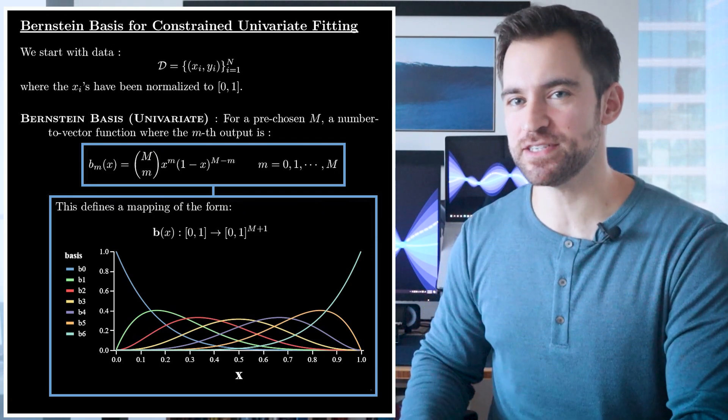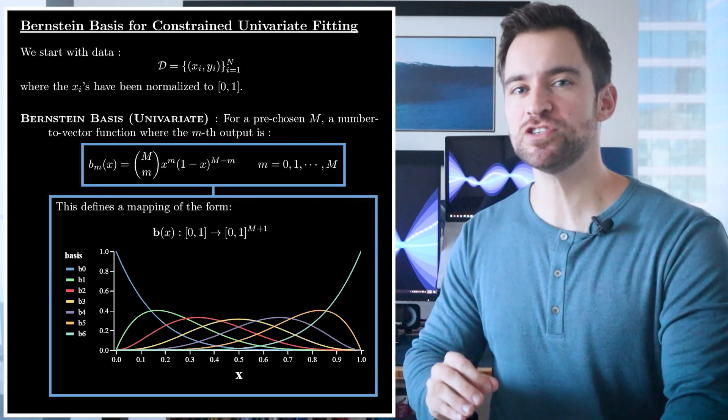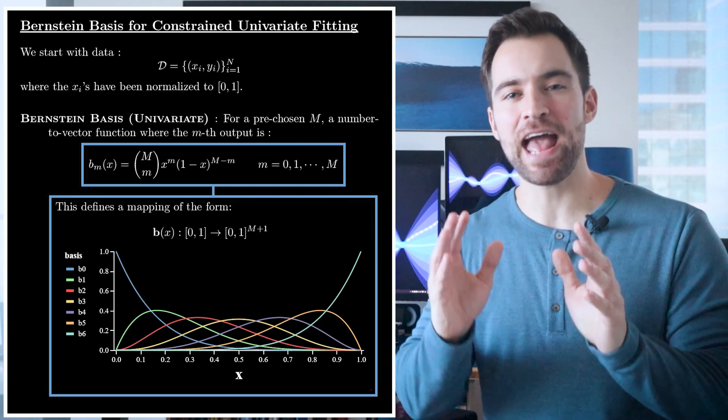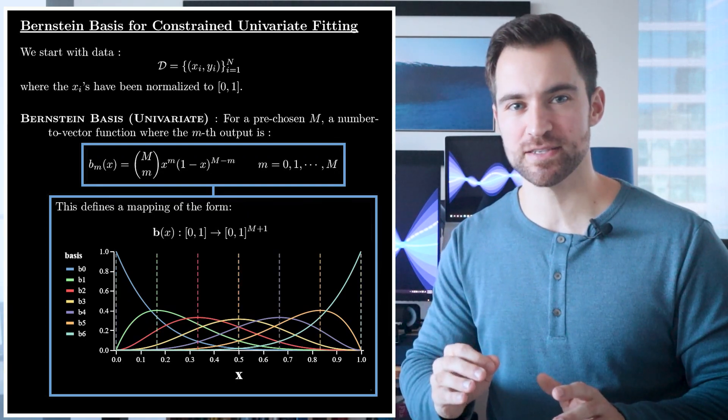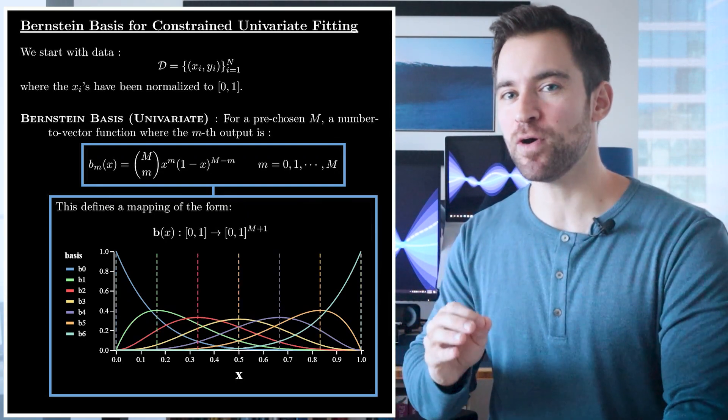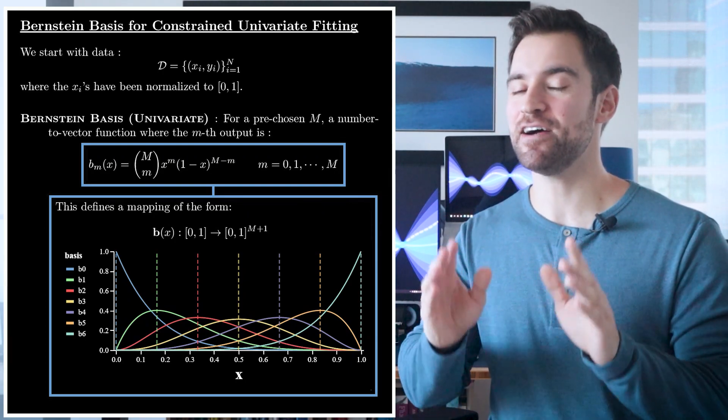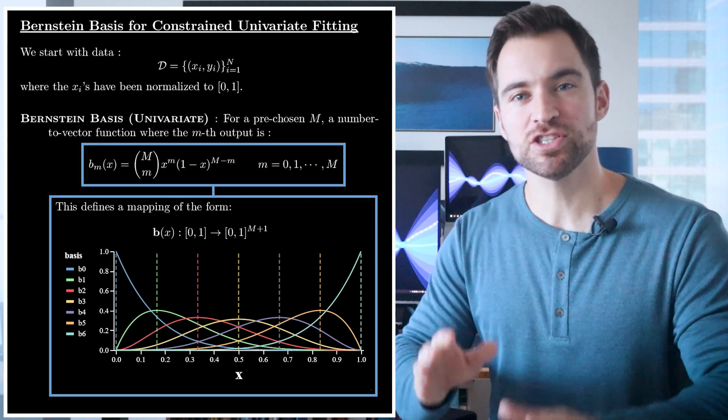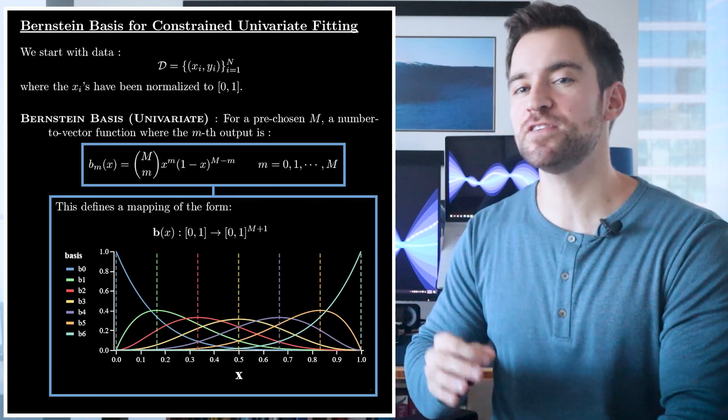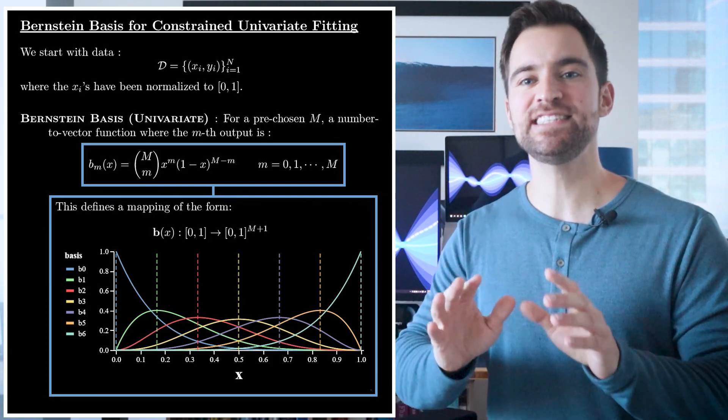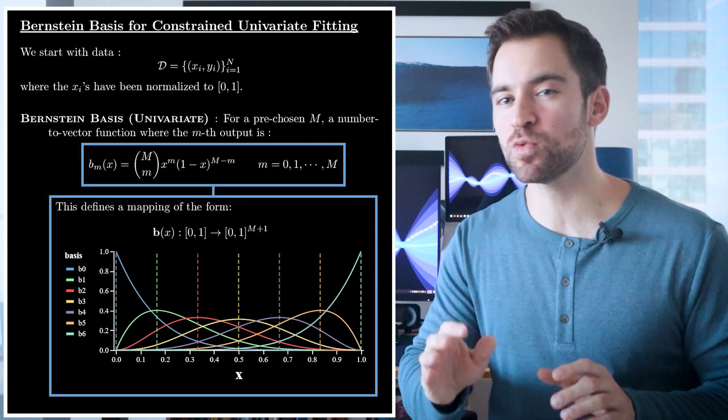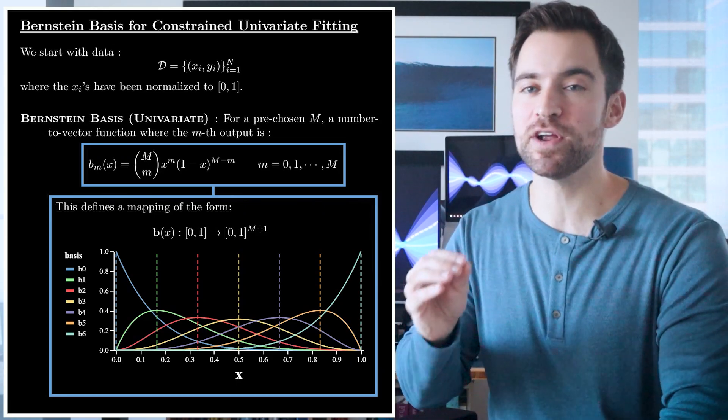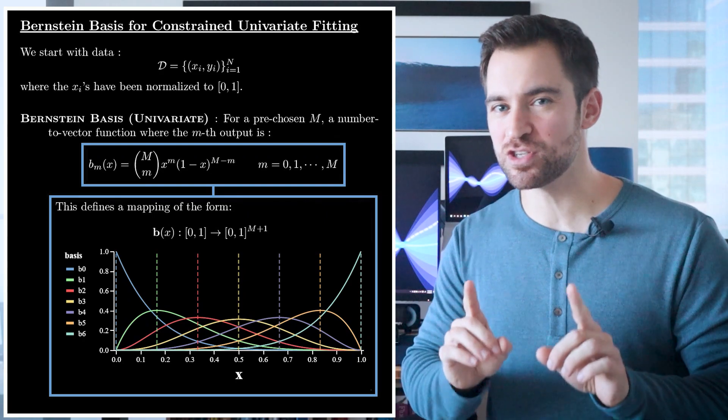All this is showing is how selecting an m gives a different number to vector mapping. Next, let's make two observations. First, each basis function may be associated with one of m plus one equally spaced points. Second, at any point, if you were to sum the basis function outputs, you get a value of one. Very roughly, you can stitch these ideas together to recognize that when you feed a basis function a number, its output is telling you how relevant one of those m plus one equally spaced points are to the point you fed in. That'll be useful intuition to keep in mind.